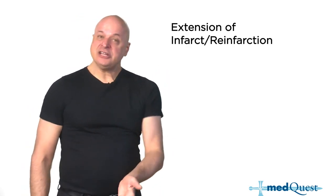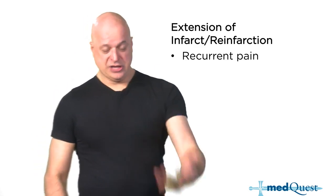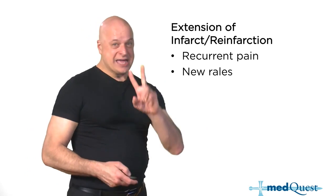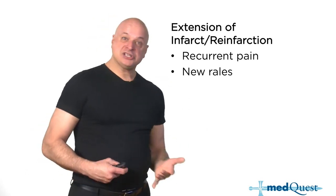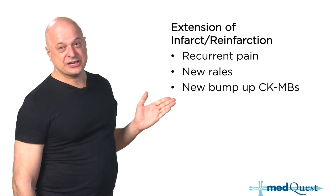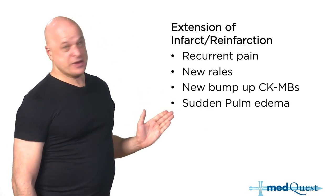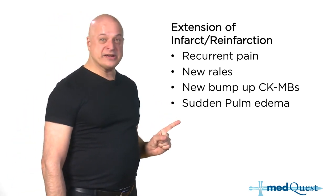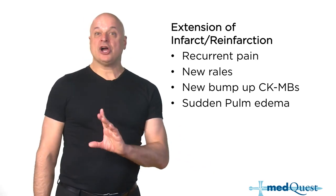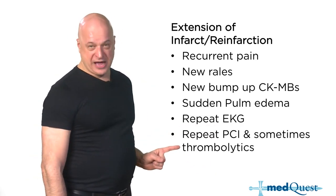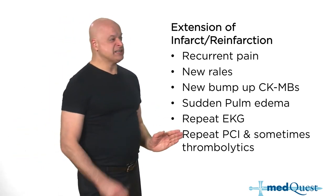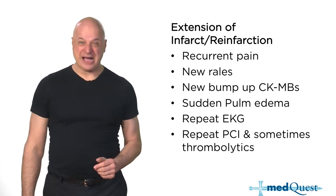When the infarct extends, get an EKG to look for the new site of infarction, get new CKMBs. It's an indication that if you haven't had angioplasty, get back in there — you're infarcting again, developing pulmonary edema, killing off the heart. Open it up if you haven't already.